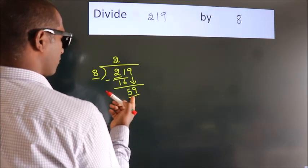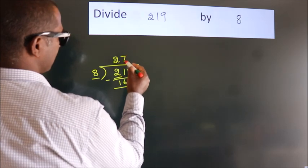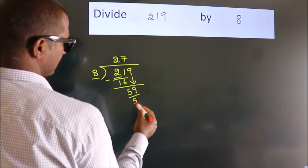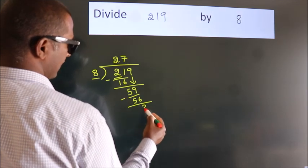A number close to 59 in the 8 table is 8 sevens, 56. Now we subtract. We get 3.